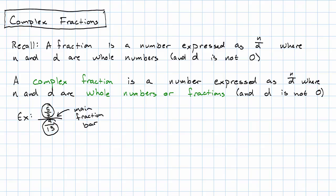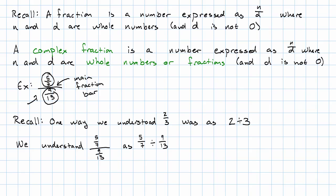What do we do with something like this? Well, what we do is simplify it, make that thing go away. How? Well, recall again, one of the ways that we understood 2 thirds was as 2 divided by 3. Similarly, we can understand this complex fraction as a division problem. And now we can just work out that division problem normally.